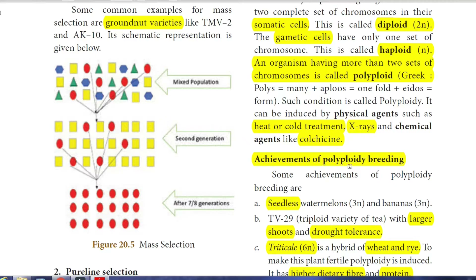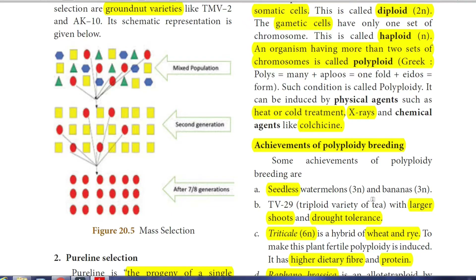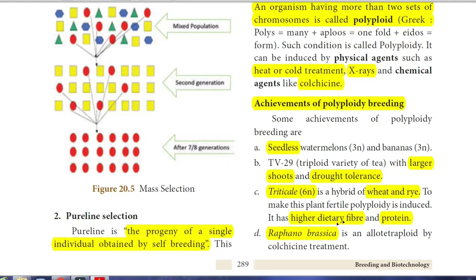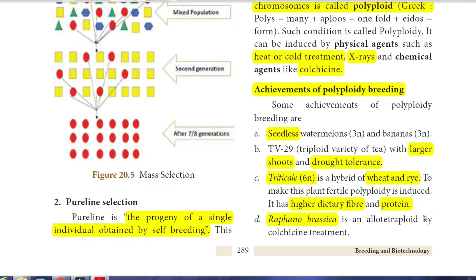Achievements of polyploid breeding include: seedless watermelons (3N) and bananas (3N) with no seeds; TB29, a triploid variety of tea with larger shoots that can grow even in dry seasons; Triticale aestivum (6N), a hybrid of wheat and rye (kambu/pearl millet) — by introducing polyploidy, fertile seeds with more dietary fibre and protein are obtained; and Raphanobrassica, a hybrid of radish and cabbage (allotetraploid), also obtained by colchicine treatment.